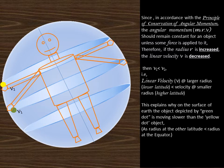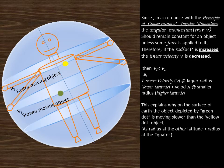That is, linear velocity v at larger radius (lower latitude) is less than velocity at smaller radius (higher latitude). This explains why on the surface of Earth the object depicted by green dot is moving slower than the yellow dot object, as radius at the other latitude is lesser than radius at the equator.